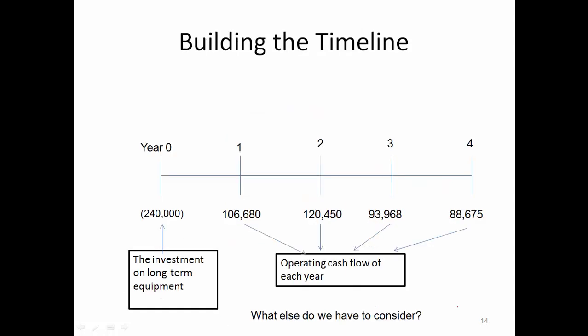Let's go back to the timeline we drew before. Remember at year 0 we had the $240,000 initial capital expenditure. For years 1, 2, 3, and 4, these numbers are the operating cash flows each year that we just calculated. Now the question is: what else do we have to consider?